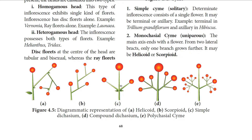The next type is simple dichasium. The central axis ends in a terminal flower, and further growth is produced by two lateral buds. Each cymose unit consists of three flowers — one central and two on either side — and this is called a true cyme. Example: Jasmine. The next type is compound dichasium, where the main axis ends in a simple flower and the terminal flower develops lateral simple dichasia on both sides. Each compound dichasium consists of seven flowers. Example: Clerodendron.